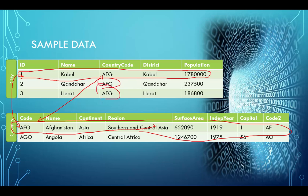We know that Kabul belongs to Afghanistan, and you'll notice that Kandahar and Herat are also related to that same entity. This is what we would call a one-to-many relationship — many different objects in one table can be related to a single object or entity in a different table. Afghanistan is the 'one' side, because cities don't typically belong to more than one country, but you can have multiple cities within a single country — that creates a one-to-many relationship.